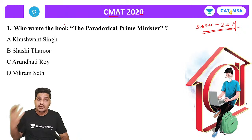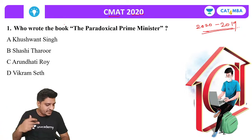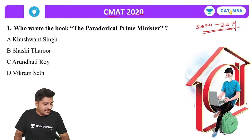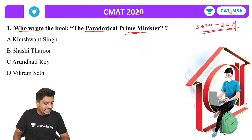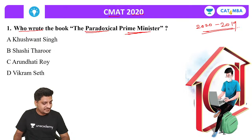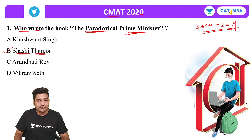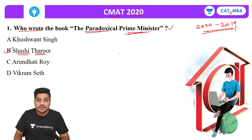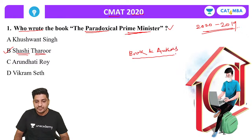CMAT 2020, first question: Who wrote the book 'The Paradoxical Prime Minister'? If you know the answer, please type it in the comment section. The correct answer is Shashi Tharoor. Shashi Tharoor is the author of 'The Paradoxical Prime Minister.' So this is a question from the books and authors section, which is an important topic for CMAT.